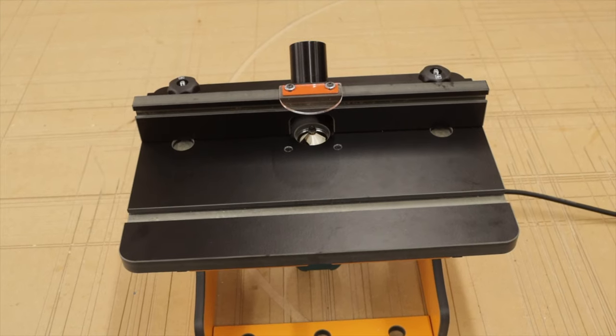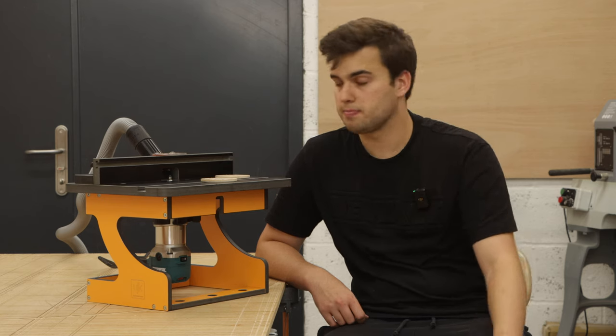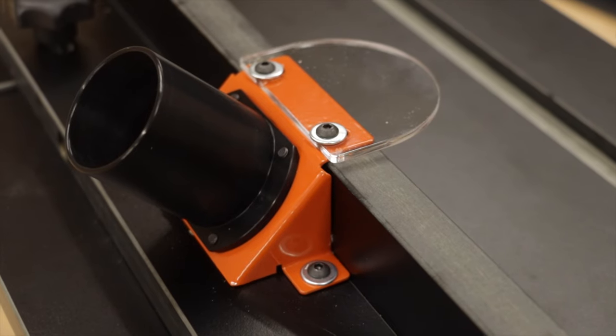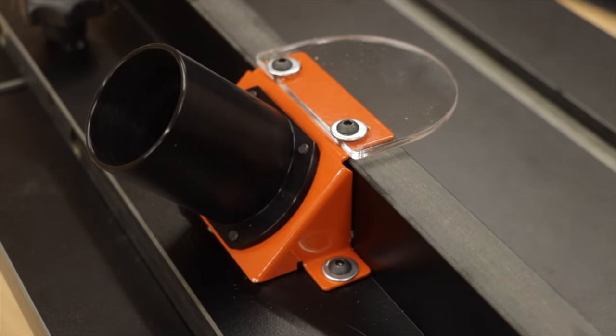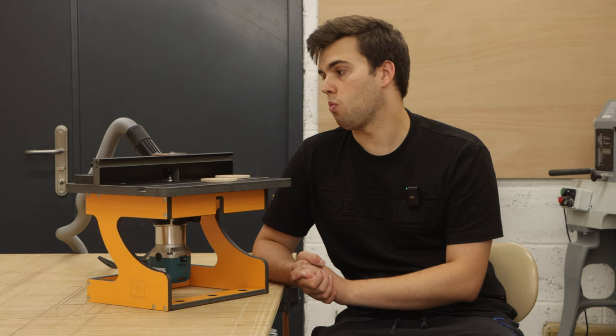It has a track on the table for a mitre fence and it has a track on the fence for a feather board. It has a metal dust port so it won't be cracking. It's also slightly tapered on the inside so you're going to get a very snug fit and it fits most workshop vacuums.